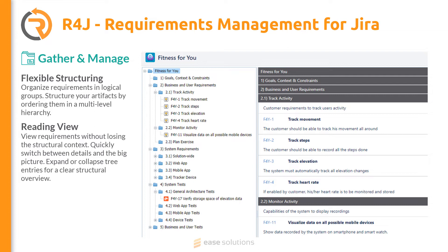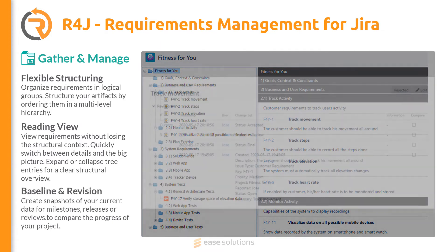However, the Jira history often appears a little unsorted and may not be as clean as you would like. For a certain point in the past, you don't get all issue details, and comparing features are missing. Therefore, R4j comes with its own revision history. It shows your changes in a chronological table with all field values. Further, you can compare your requirements directly between different revisions.